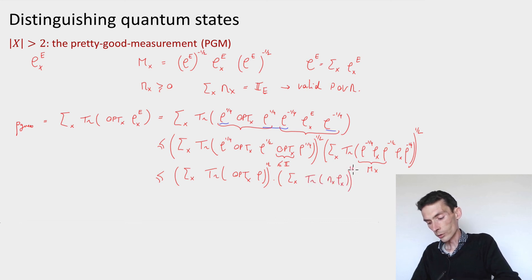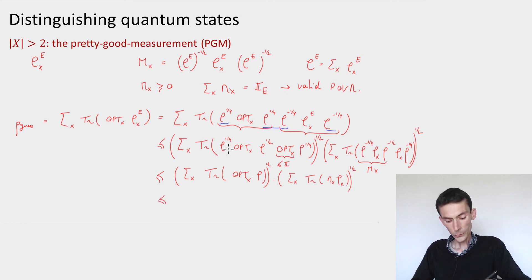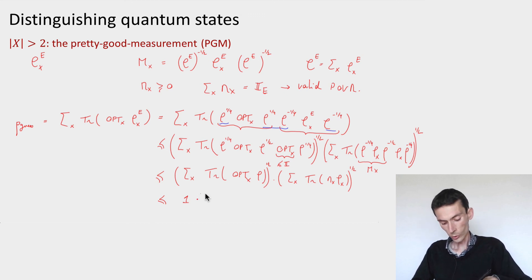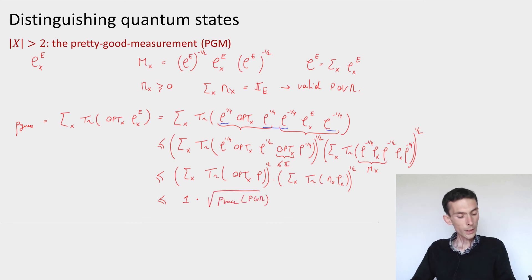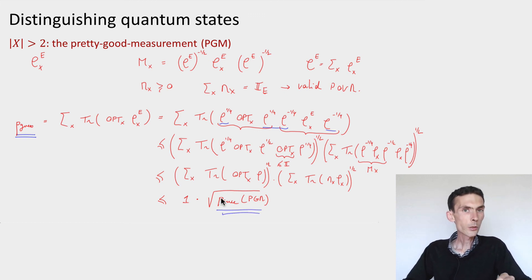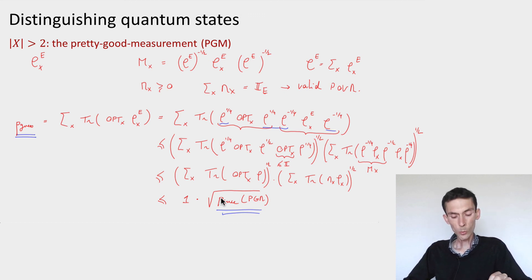The first term is at most 1, because the sum over x of M^{opt}_x is identity and rho_E is a density matrix with trace 1. The second expression is exactly the success probability of the pretty good measurement. So we obtain: the optimal guessing probability p_guess is at most the square root of the success probability of the pretty good measurement. Inverting and squaring, the success probability of the PGM is at least the square of the success probability of the optimal guessing measurement.